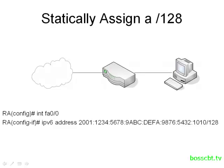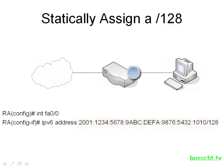Assigning a full slash 128 is pretty straightforward. All we would have to do to configure this router's FA0/0 interface with an IP version 6 address is jump into interface configuration mode and issue the IPv6 address command. Then we type out the entire 32 hexadecimal number, followed by the slash notation, stating what prefix it is. This is very similar to configuring an IP version 4 address — there's just a lot more work to do.